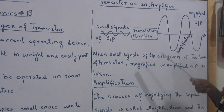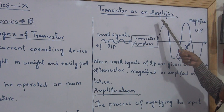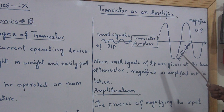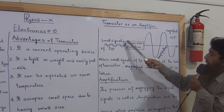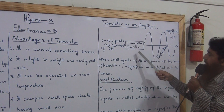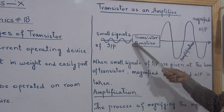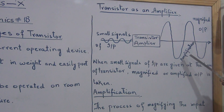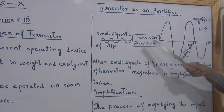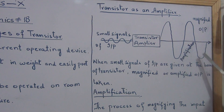Next, we are using the transistor as an amplifier. Amplifier means small signals of input are magnified in the output. When small signals of input are given at the base of the transistor, these signals are magnified by the transistor, giving amplified output.